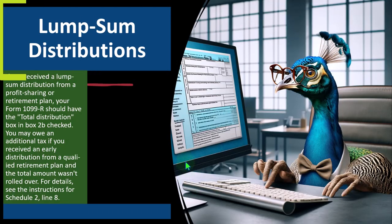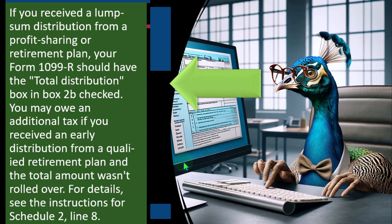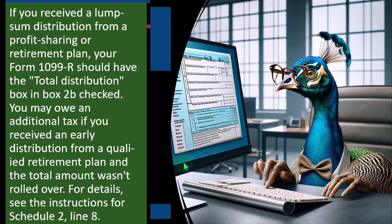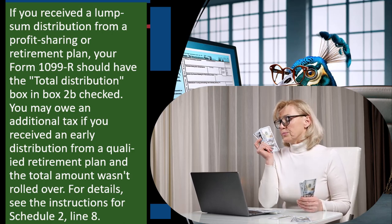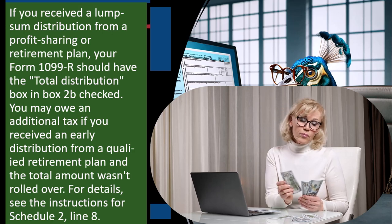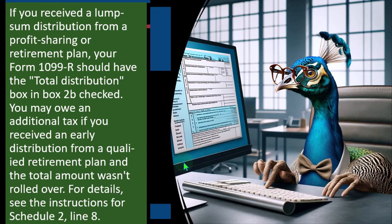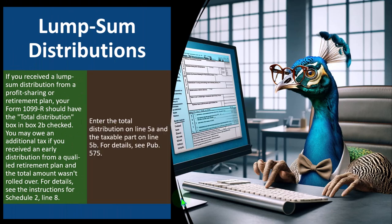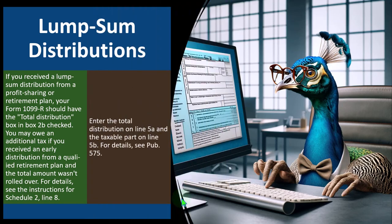Lump sum distributions: if you receive a lump sum distribution from a profit sharing or retirement plan, your Form 1099-R should have the 'total distribution' box checked. You may owe an additional tax if you received an early distribution from a qualified retirement plan and the total amount wasn't rolled over. This often happens when people change jobs — be careful, because pulling all the money out could subject you to taxes plus early withdrawal penalties. For details, see the instructions for Schedule 2, Line 8. Enter the total distribution on line 5A and the taxable part on line 5B. For full details, see Publication 575.